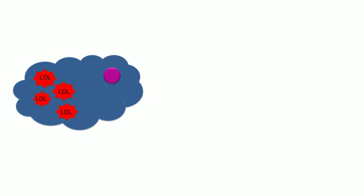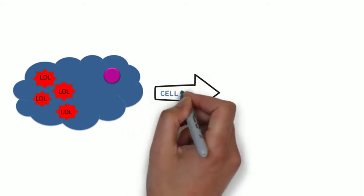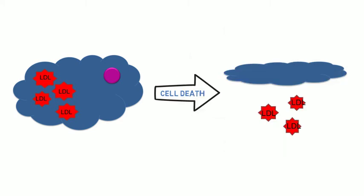When cell death of the macrophage occurs, this will result in the release of bad lipid molecules into the environment and contribute to the development of plaque and plaque instability. This consequently leads to the progression of atherosclerosis.